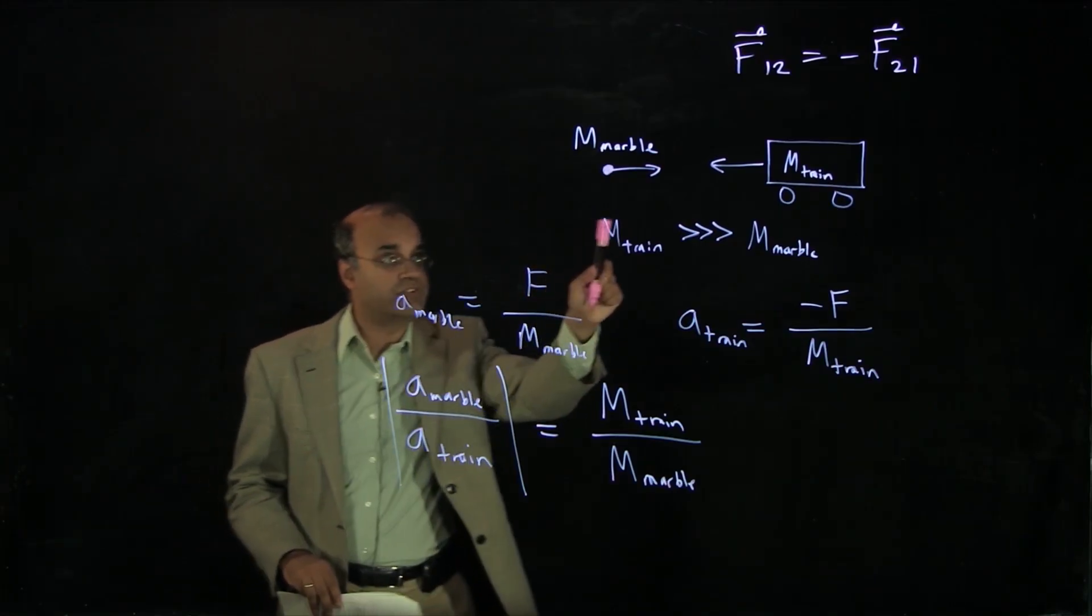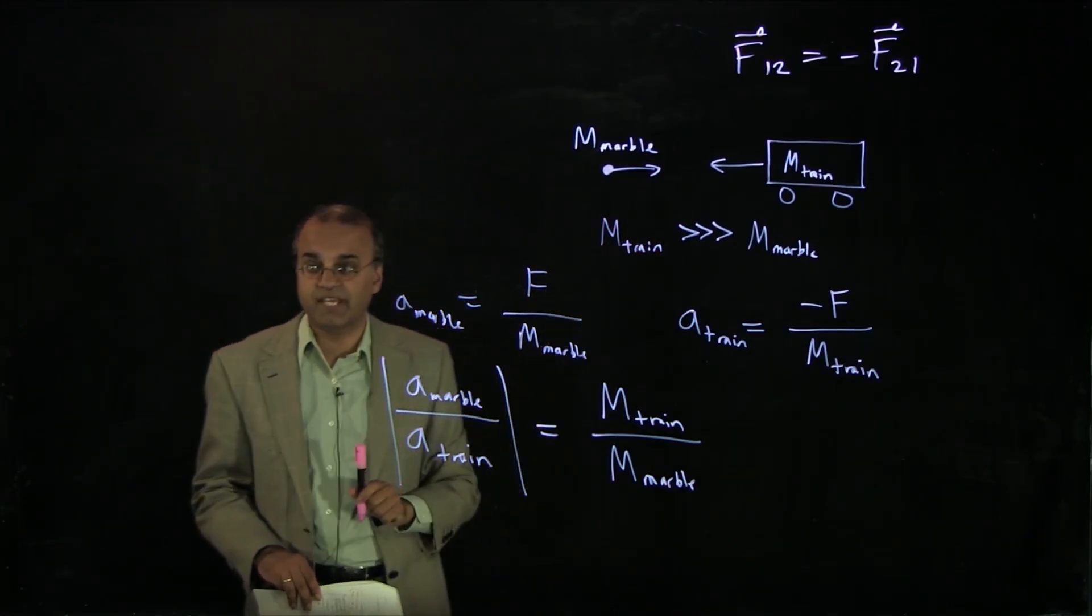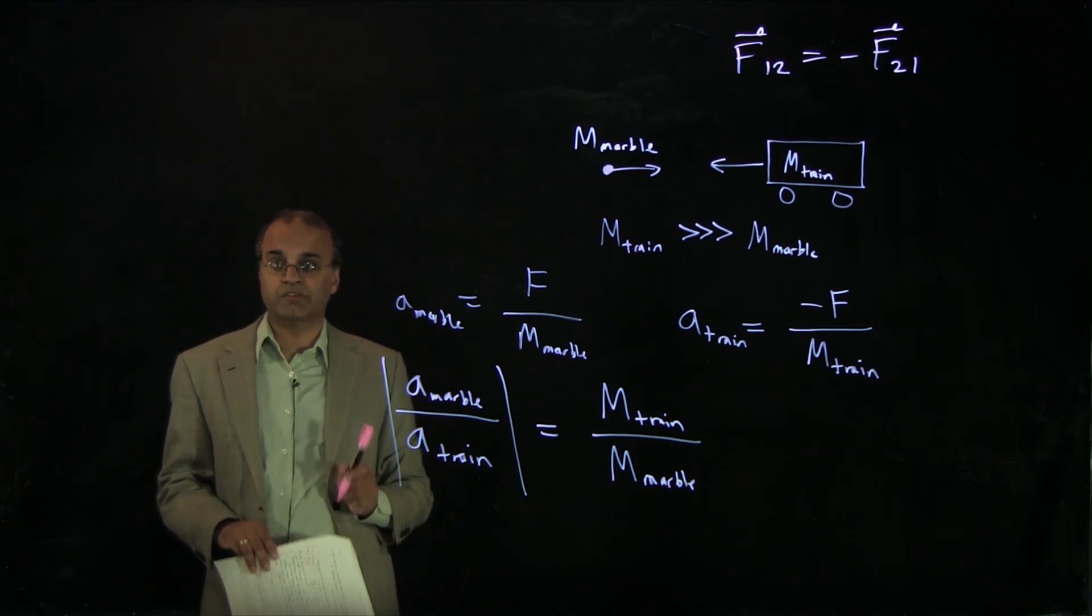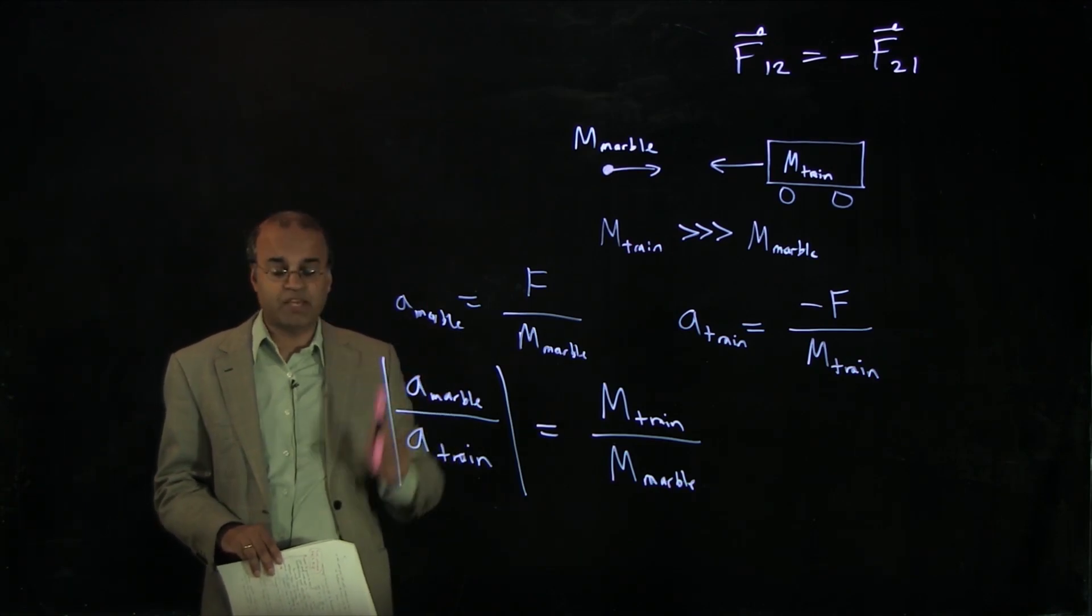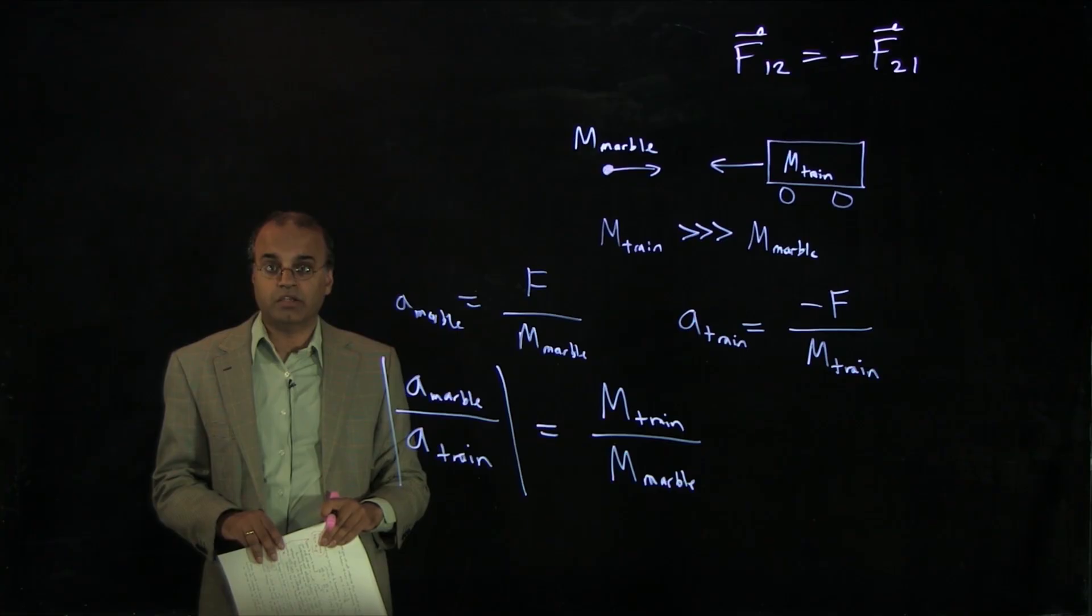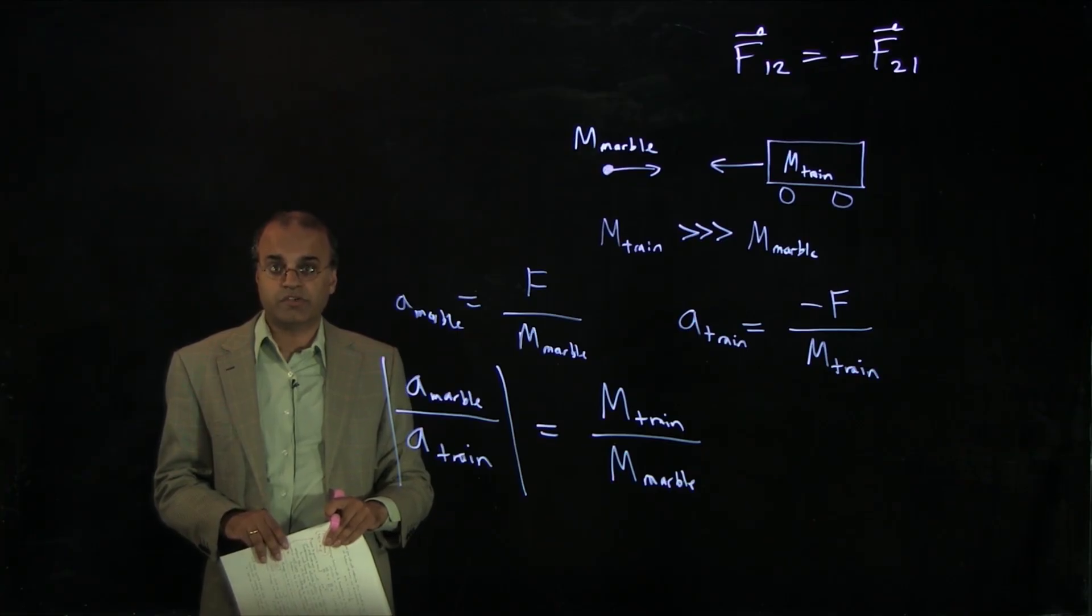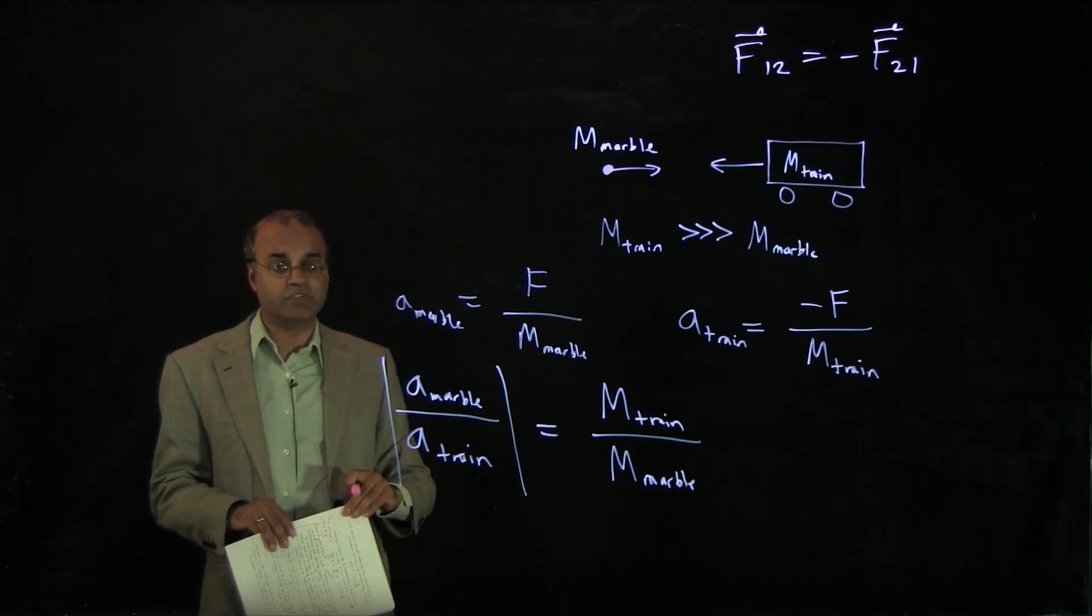Even though the force experienced by each object is identical, because of their different masses, their accelerations will be very different. That gives us an example of what we mean by Newton's third law in terms of the interaction pair and equal and opposite forces acting.